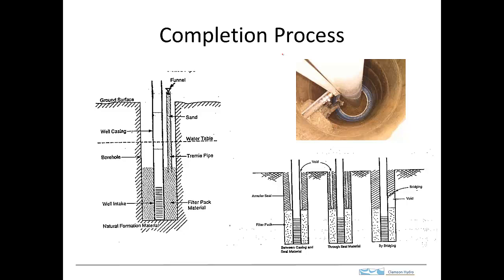So this shows the process of completing the well in a little more detail. In this diagram, the screen and the casing has been put in the well and the sand is added to the annular space. And what this shows is a tremie pipe right there. And the tremie pipe is used to ensure that the sand gets all the way down to the screen.